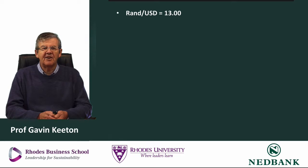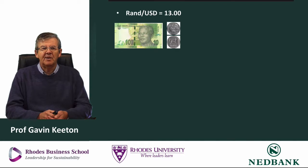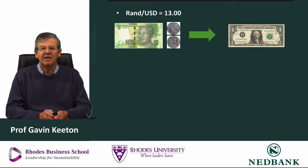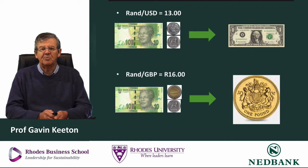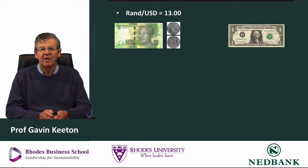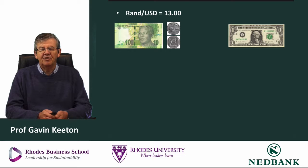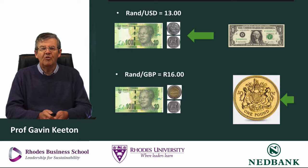Currently the rand-dollar exchange rate is around 13. What does that mean? It means we need 13 rand to buy one US dollar. At the moment, the rand-British pound exchange rate is 16 rand, meaning we need 16 rand to buy one British pound. We can also turn this around: for somebody who earns dollars, one US dollar can get them 13 rand, or one British pound can get them 16 rand.